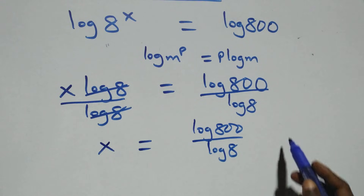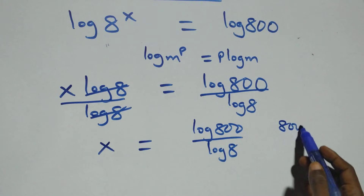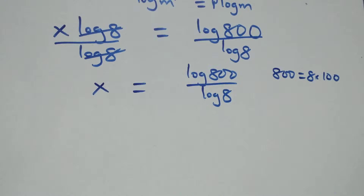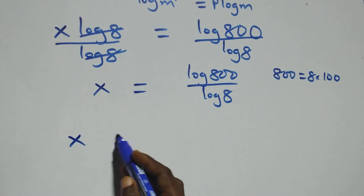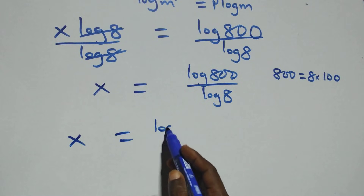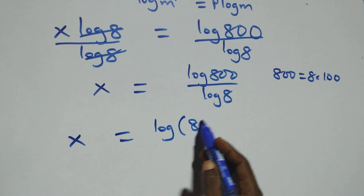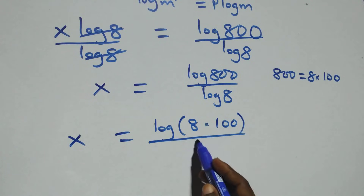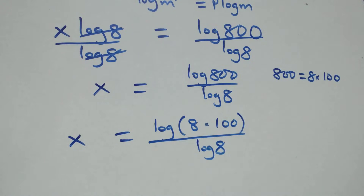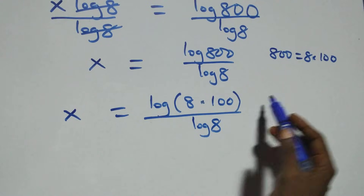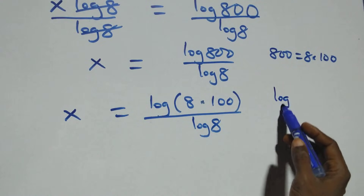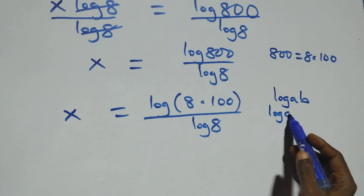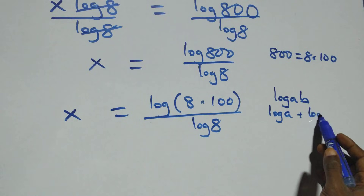In the next step, we can rewrite 800 as 8 times 100. So this becomes x equals to log(8 × 100) over log 8. This follows the log product rule: log(a × b) is the same thing as log a plus log b.